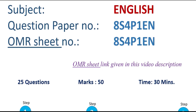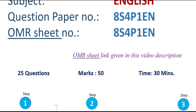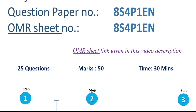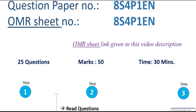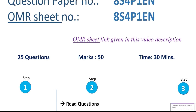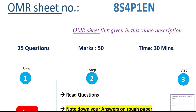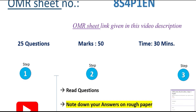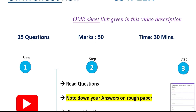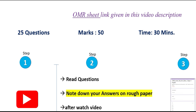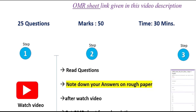What student has to do? Here are three steps. Step 1: Watch this video. Step 2: Read all the questions. Note down your answers on rough paper. After watching this video, get the OMR sheet from this video's description box. Fill the OMR sheet with your answers. In the OMR sheet, your registered email ID and role ID need to be filled, then fill your correct answers and submit it.